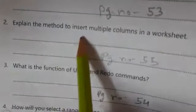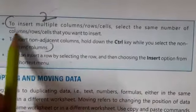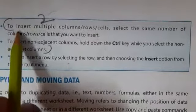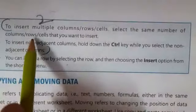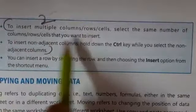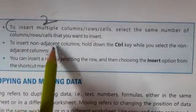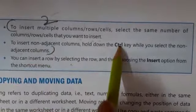Question number two: Explain the method to insert multiple columns in a worksheet. For this, open page number 55. From the tip points, you have to write: To insert multiple columns, rows, cells, select the same number of columns, rows, cells that you want to insert. To select non-adjacent columns, hold down the Control key while you select the non-adjacent columns. So this is the answer number two.